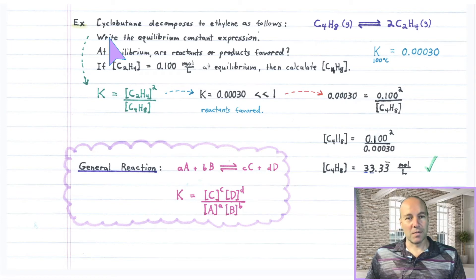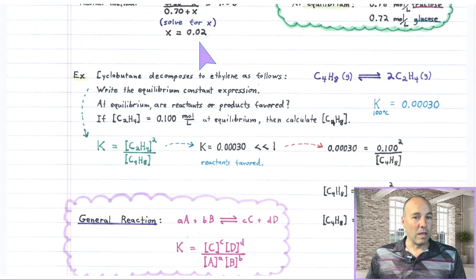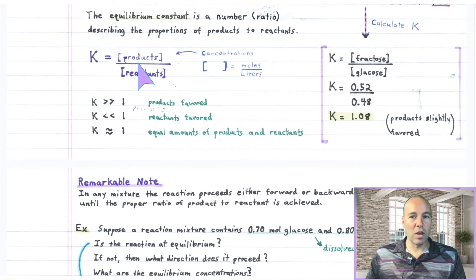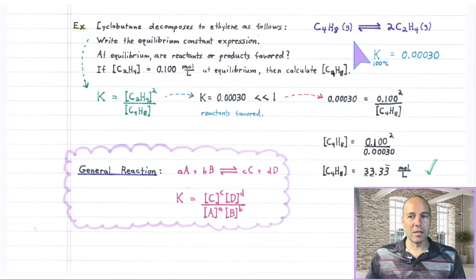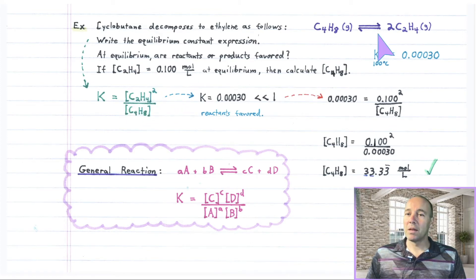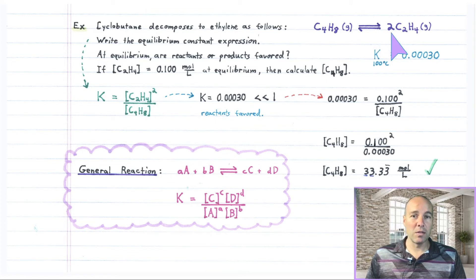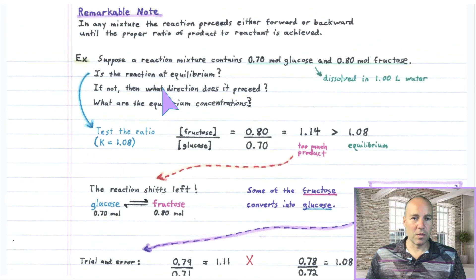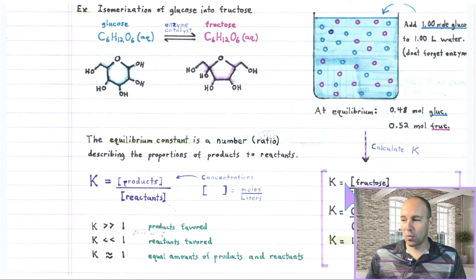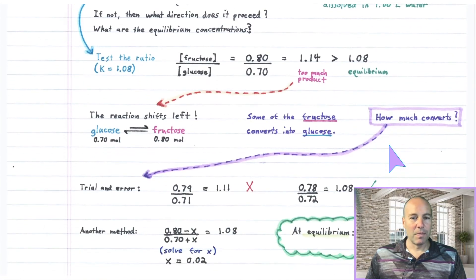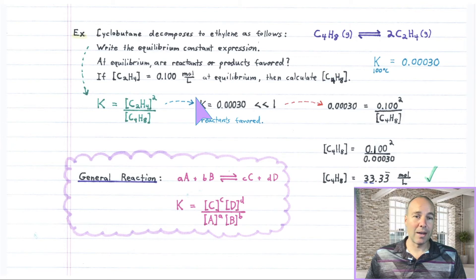First, let's write the equilibrium constant expression. Equilibrium constants are product concentrations over reactant concentrations. The product C2H4 goes in the numerator and is squared because of the coefficient 2 — concentrations are raised to their stoichiometric coefficients as exponents. For glucose and fructose, the coefficients were both 1, so no exponents were needed. Here, with a coefficient of 2, the concentration of C2H4 is squared.